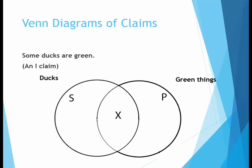Venn diagrams use an X to indicate some or some are not. In categorical logic, 'some' means at least one — it doesn't matter how many examples there are. If there is at least one, it is symbolized by placing an X in the area where there is an example. In this case, the X is in the area where the two circles overlap, indicating there is at least one thing that is both a duck and green. No shading is used because shading is only used to indicate there are no examples of a category.